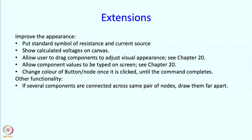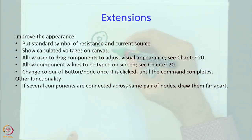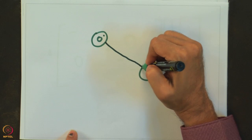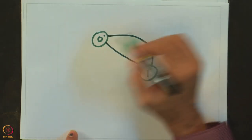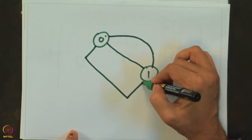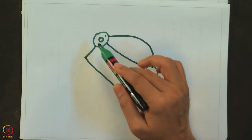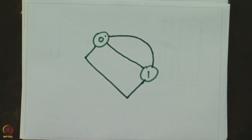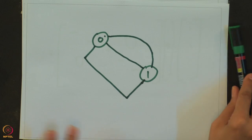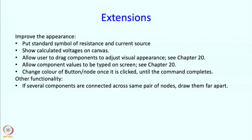Other functionality could also be added. If several components are connected across the same pair of nodes, we need to draw them apart. Right now we are drawing them on a straight line, but if a second component is added, we may need to put it on a curve or a different line, or let the user decide. That needs some work involving geometry.